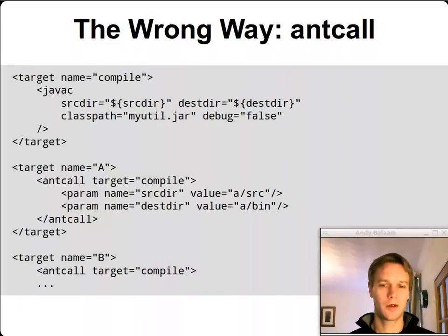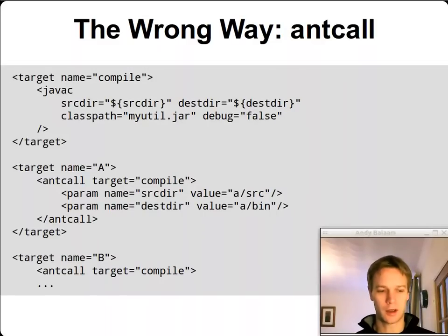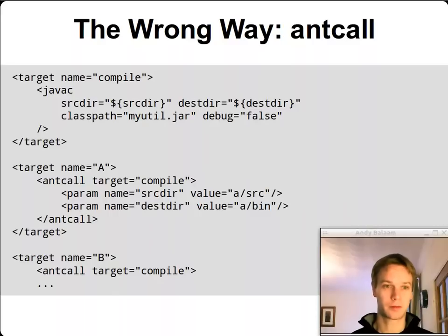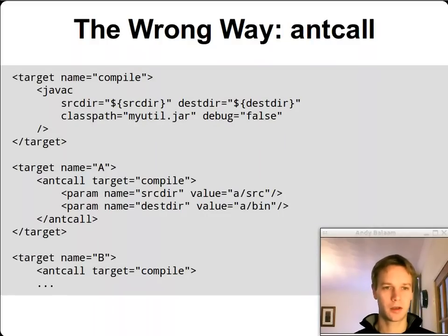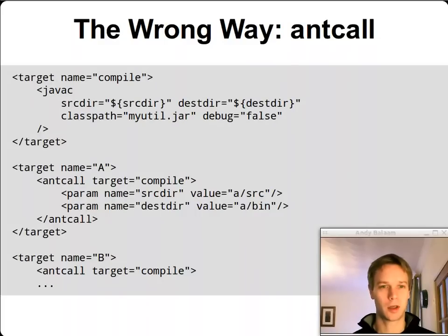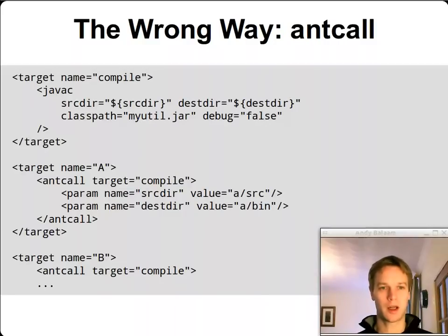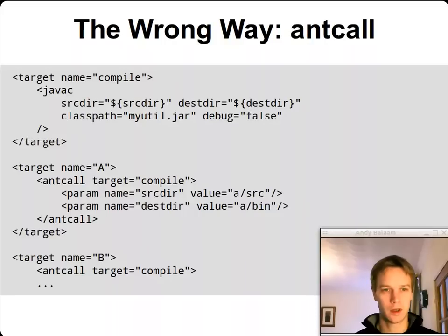Here's the way we've been doing this in our projects until very recently — the brute force way I found. There's an Ant task called antcall, which runs Ant again from inside Ant. The example: at the top we've got a target called compile, and in there we have the shared code. The classpath and debug information are only written once now — in that compile target. The source dir and destination dir are obtained from properties. In Ant, you get a property using dollar and squiggly brackets and its name.